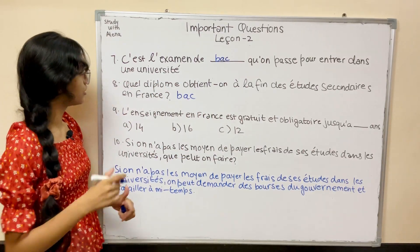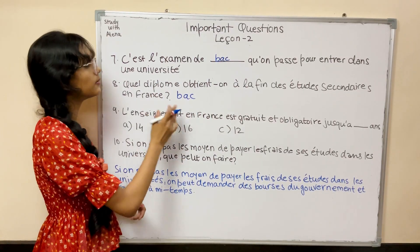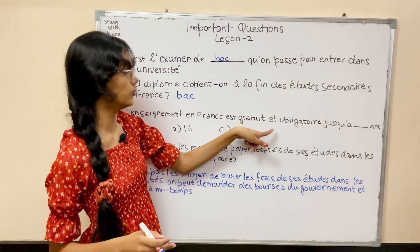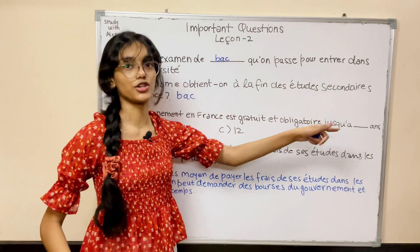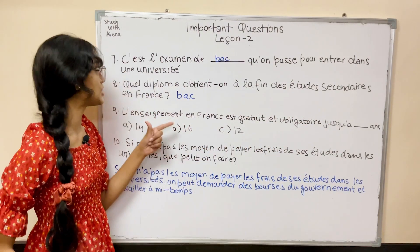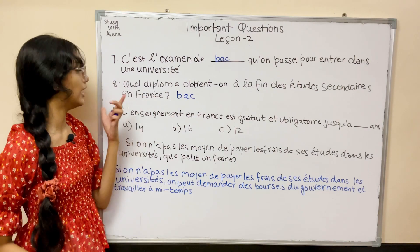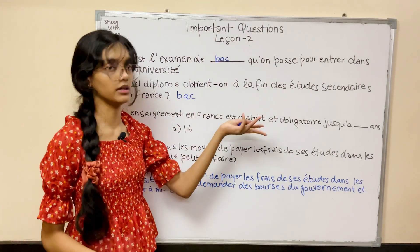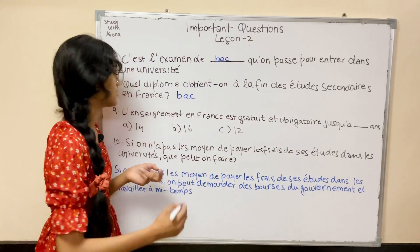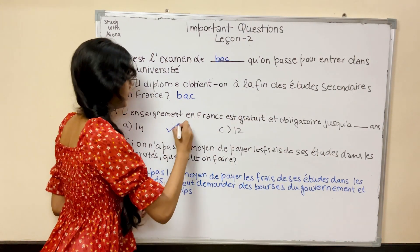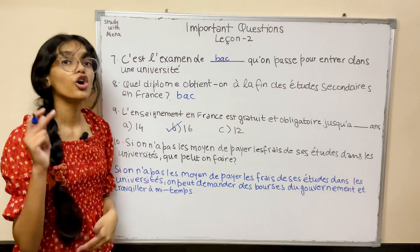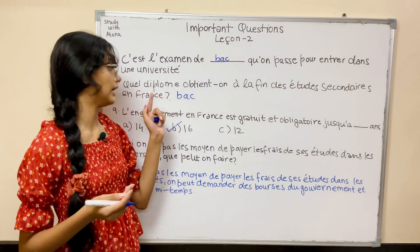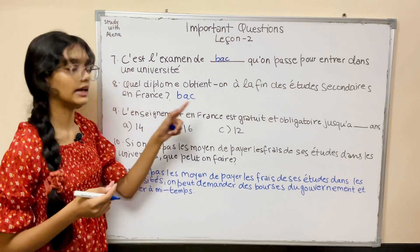Question 9: L'enseignement en France est gratuit et obligatoire jusqu'à — till which age is education in France free and mandatory? It's 16 in France. Comment down below and tell me what is the age for India.